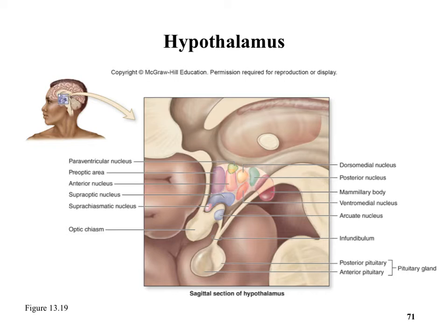One important part of the hypothalamus is the suprachiasmatic nucleus (SCN). At one point, neuroscientists had data suggesting the SCN and the ventromedial nucleus were associated with sexual orientation, but no research papers on that topic have appeared since then.